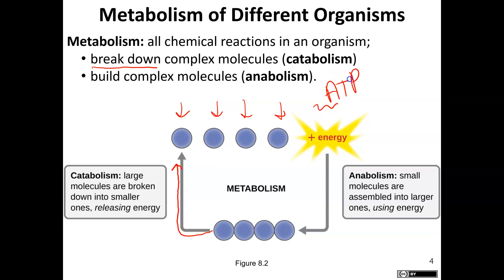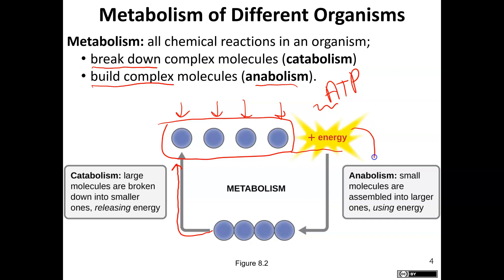Anabolism is the opposite — we're building up. We take small subunits, add in energy, and build up large polymers. For example, amino acids building up a protein, or glucose building up glycogen. Any type of small molecules building up something larger is an anabolic reaction.